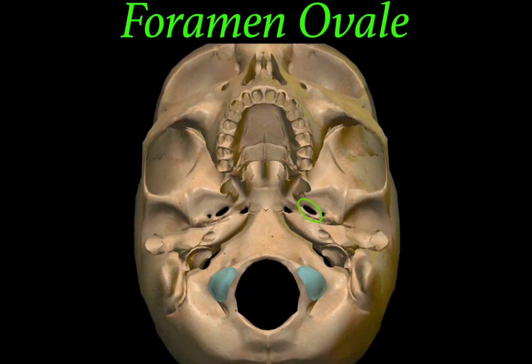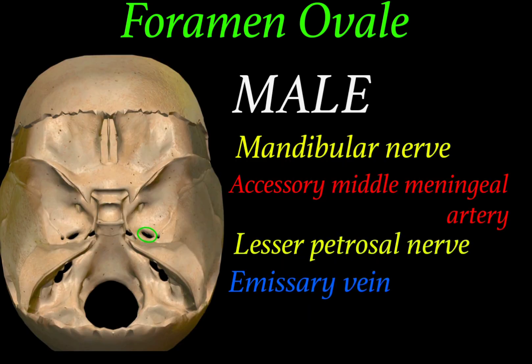Besides foramen rotundum, we find an oval-shaped foramina known as foramen ovale. Foramen ovale gives passage to MALE structures: M stands for mandibular nerve — the third branch of the trigeminal ganglion (5th cranial nerve) — A stands for accessory middle meningeal artery, L stands for lesser petrosal nerve, and E stands for emissary vein.